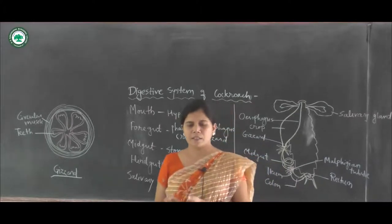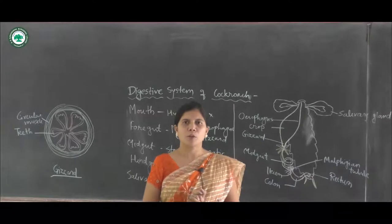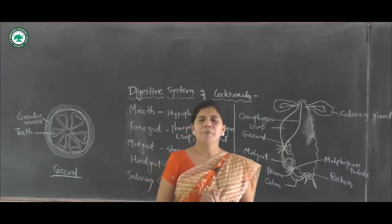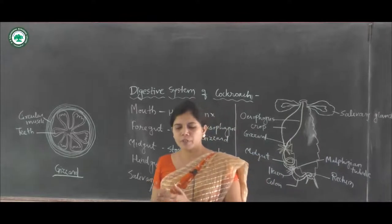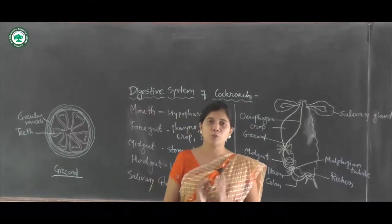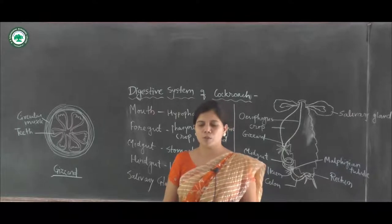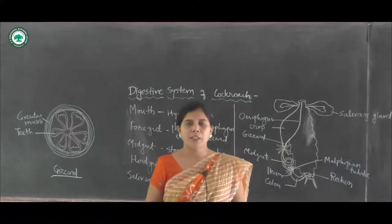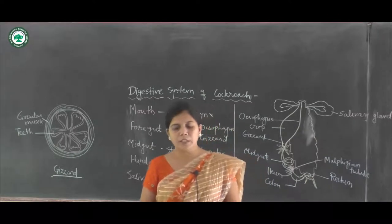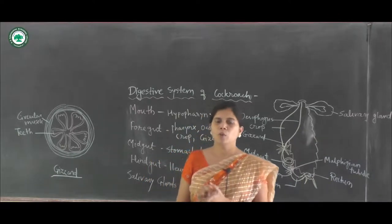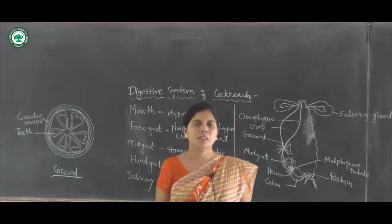The alimentary canal of the cockroach is a long tube of about 6 to 7 centimeters with different diameters, having two openings. This alimentary canal is divisible into three regions: the foregut, midgut, and hindgut.